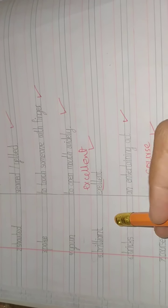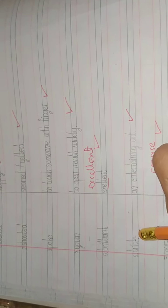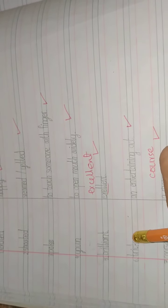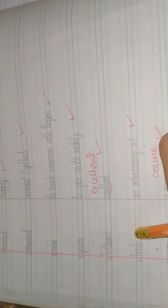Brilliant means very good, excellent. These spellings written over here are correct, these are incorrect. Trick is an entertaining act. Trick means koi bhi entertaining act, koi bhi aisa act jo aapko entertain kare.